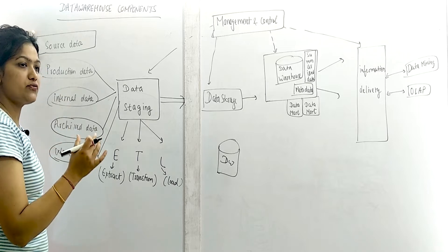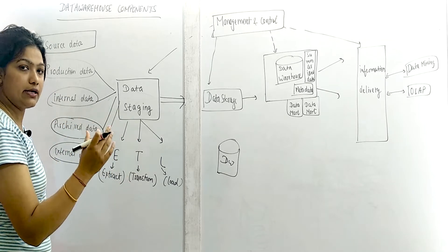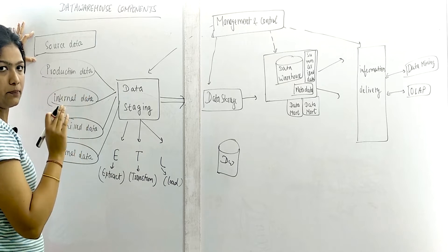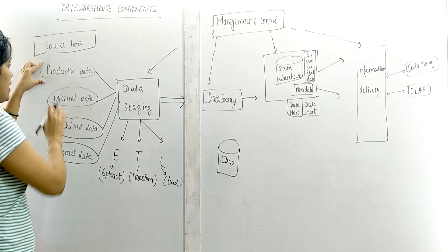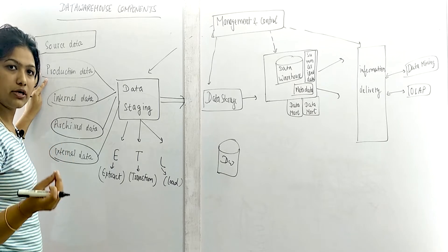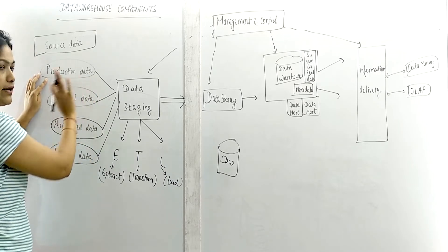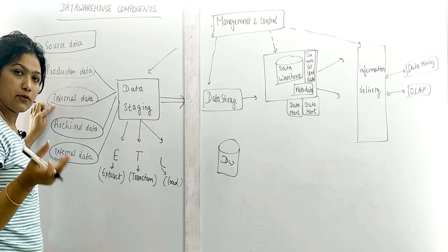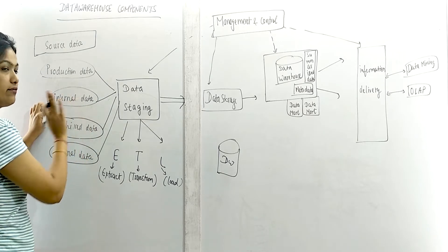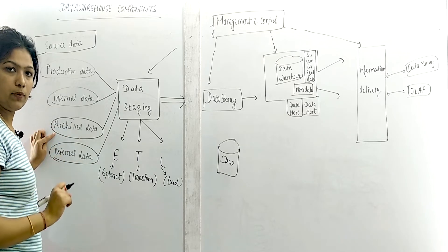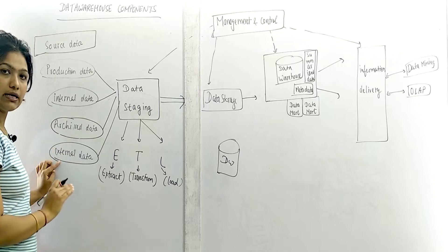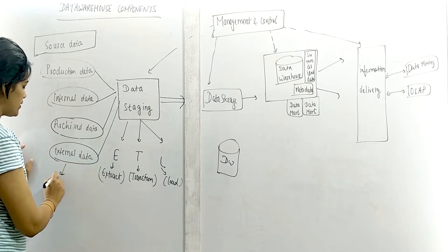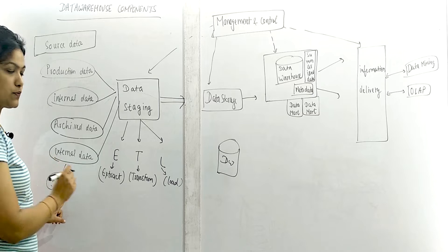First is source data — the sources from where we are getting data to store in the data warehouse. Suppose I want to store some information about a company. There is production data — the company's own transactional data. There is internal data — information only the company knows. There is archive data — the historical data of the company. And then there is external data, data coming from different external sources like newspapers or online.